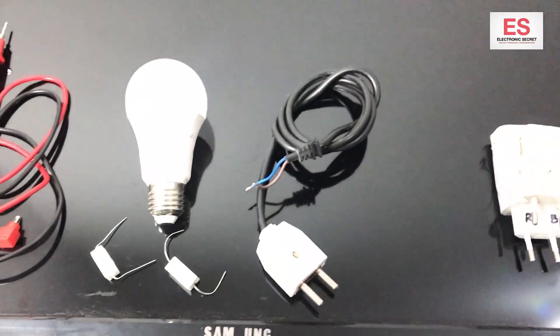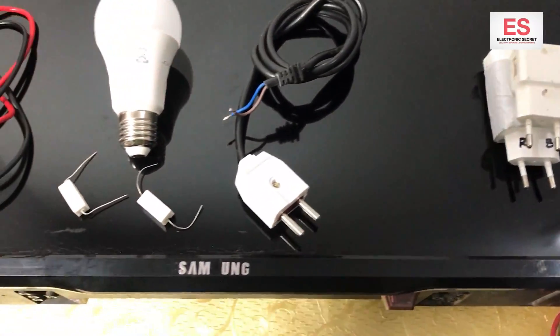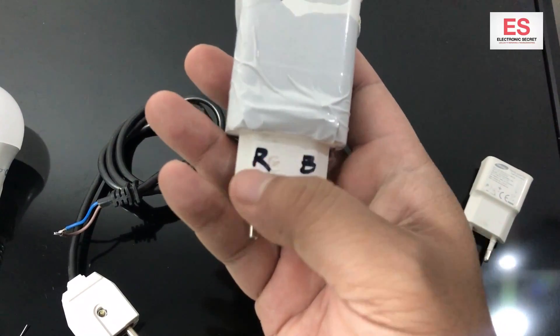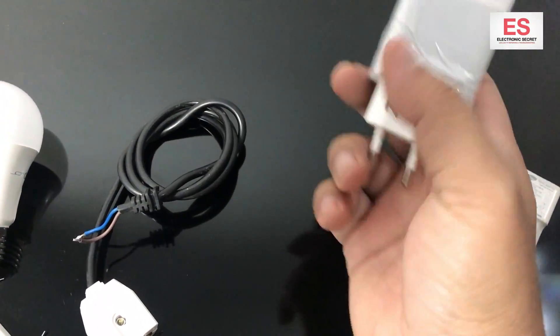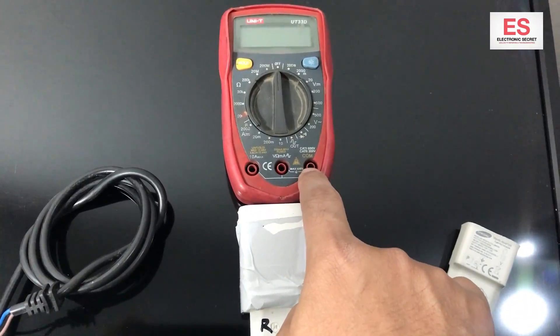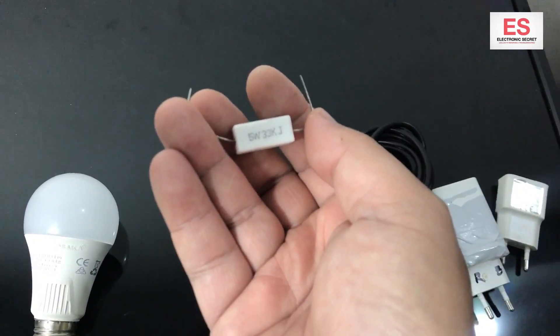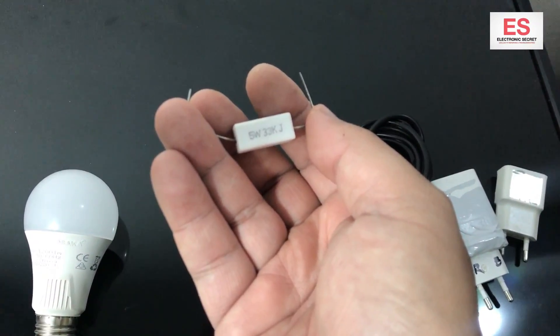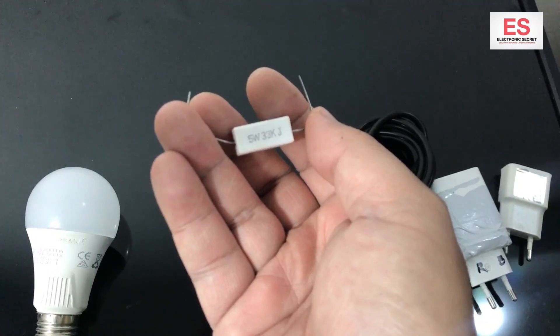You will need an empty casing of a charging adapter, a wire marked R and B on the red and black on the legs so the polarity cannot be changed. You will need a 5 watt 33 kilohm resistor and an LED bulb.